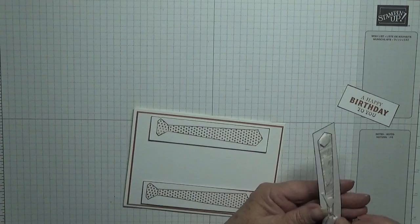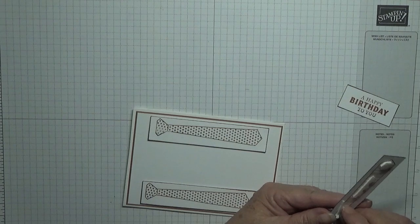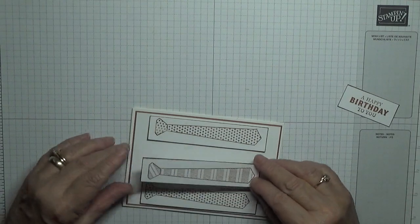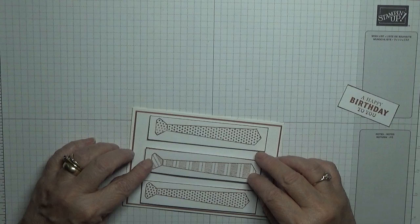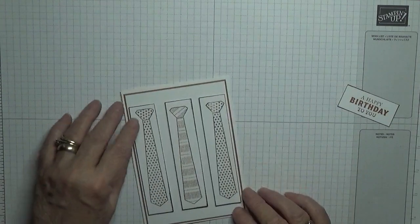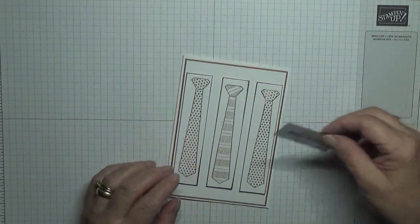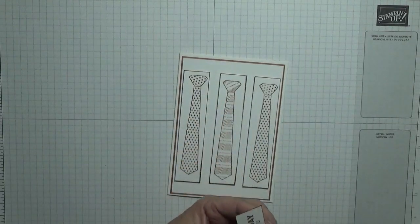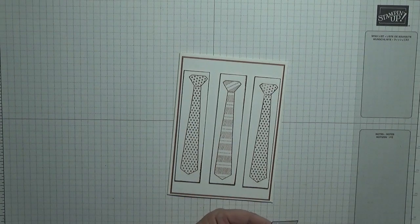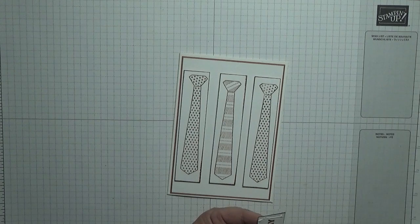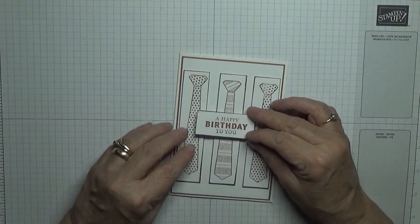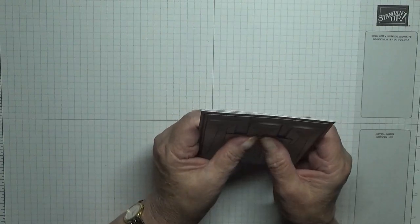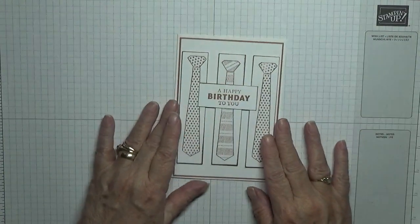And then this one you just pop in the middle. That's it. And this just goes along there like that. And you just glue that bit and pop that there, making sure it's straight. And that is our card.